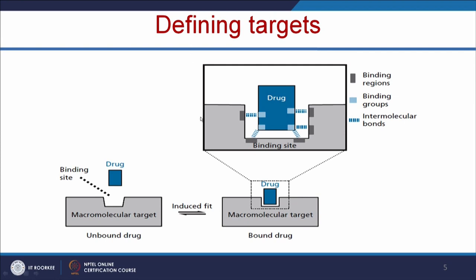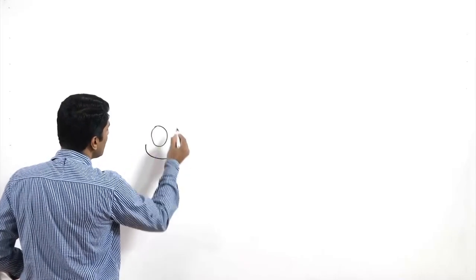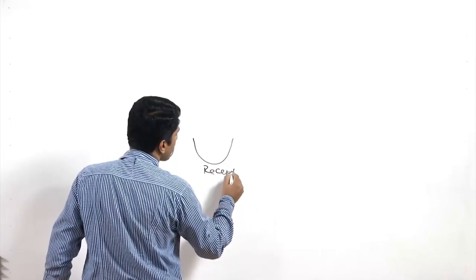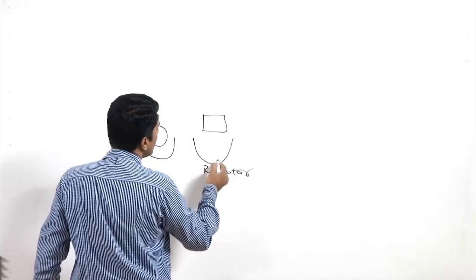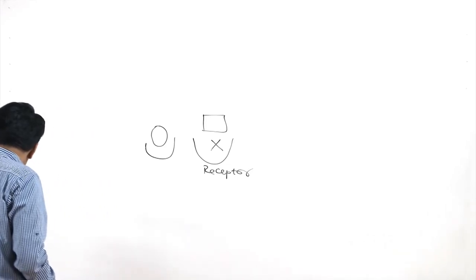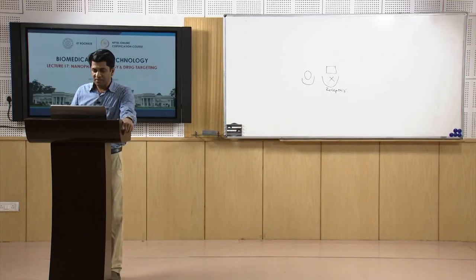The first category is defining the targets. When you make a drug, it should exactly match with your binding site, that is your receptor site. If it is not binding effectively, then the therapeutic efficiency will be less. For example, if your receptor has a particular shape, the drug should go and exactly match with it. If the drug shape does not fit the binding site, efficiency will be less.